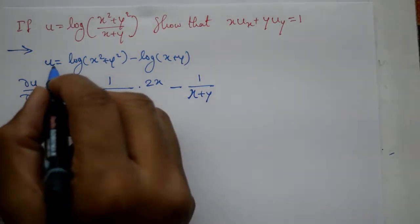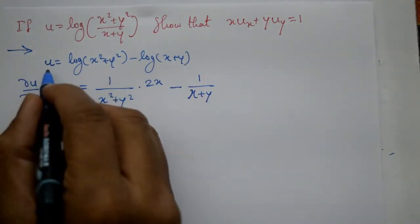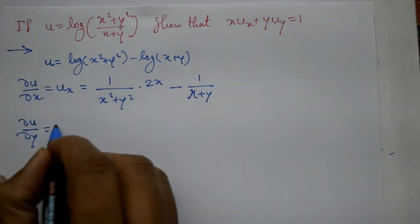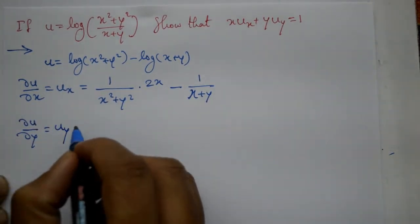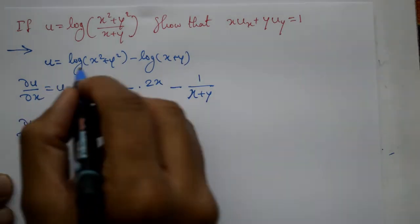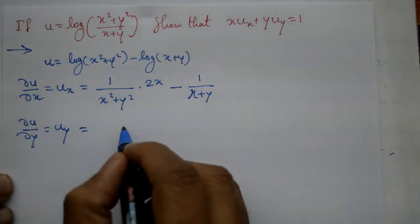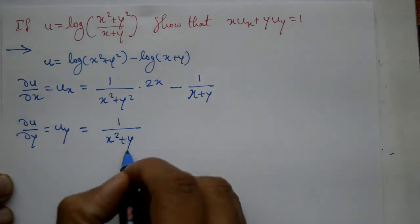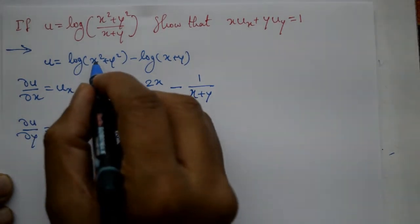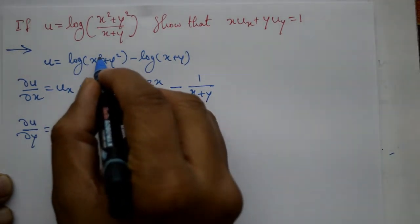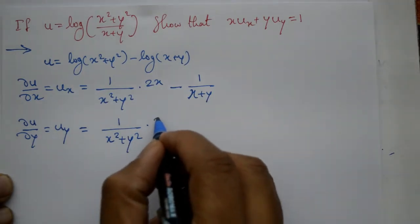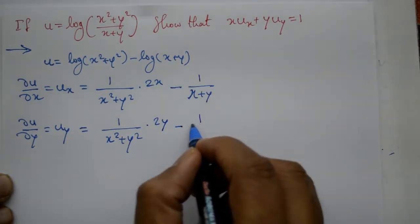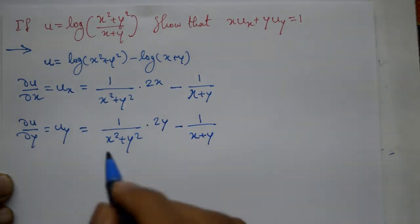Baad me dou u by dou y chahiye, differentiate u with respect to y karenge. x treated as a constant — isko differentiate karenge and this is equal to 1 by x square plus y square, baad me x square plus y square mein x constant hai, y square differentiate kaya to 2y ho ga, minus 1 by x plus y hai ga.